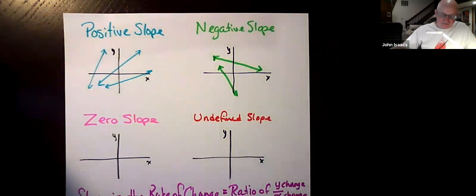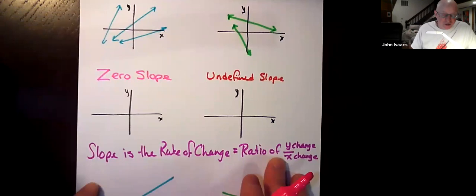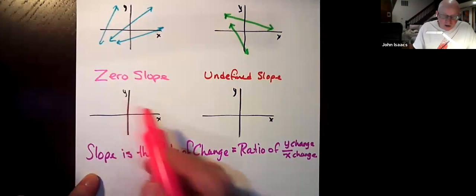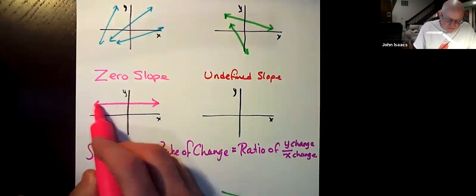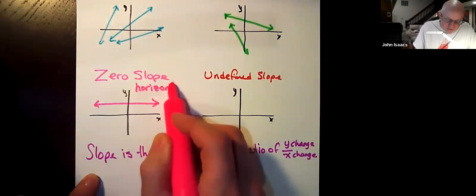Zero slope. Zero slope means the thing doesn't change. There has no change, zero change. So as x moves along, y doesn't change. That means that the slope is zero. Zero slope looks like this. That's also called a horizontal line.